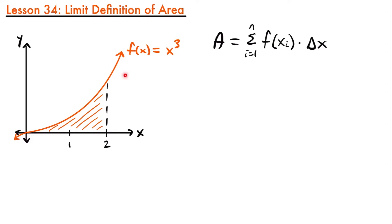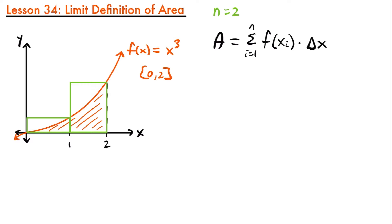If we wanted to know the area under this function f(x) = x³ from 0 to 2, so we'd be looking at the interval from 0 to 2, we would find this area using a certain number of rectangles n. If n equals 2, our rectangles would look like this — one here and one here — and we'd use these two rectangles to approximate the shaded region underneath the curve.